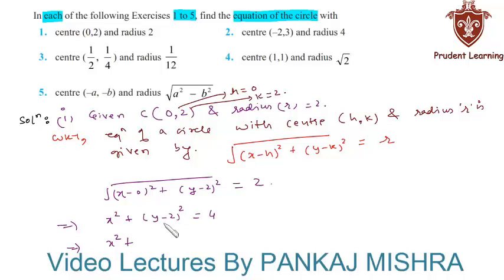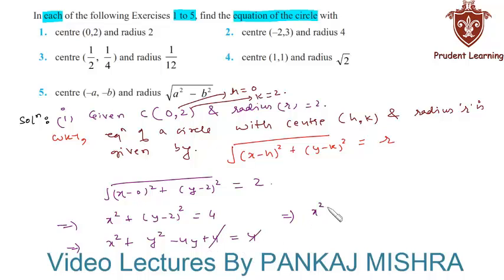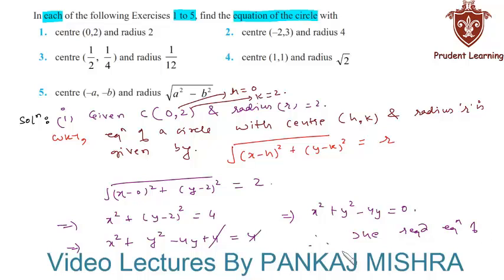Expanding (y minus 2) whole square we get y square minus 4y plus 4, all equal to 4. Here we can cancel 4 on both sides, so we are left with x square plus y square minus 4y equal to 0. Therefore the required equation of the circle is x square plus y square minus 4y equal to 0.